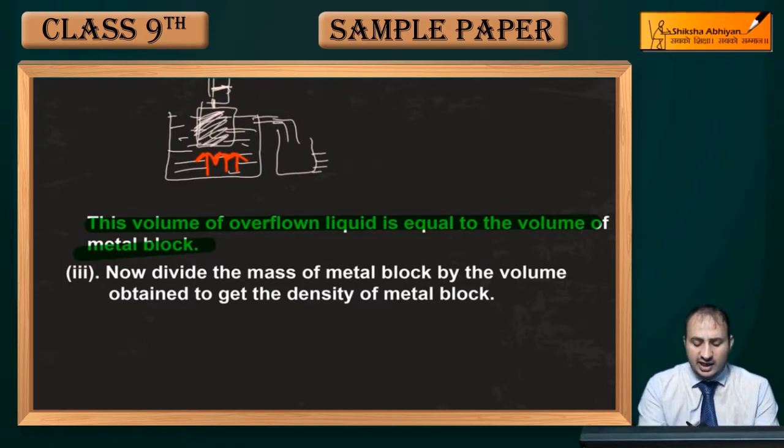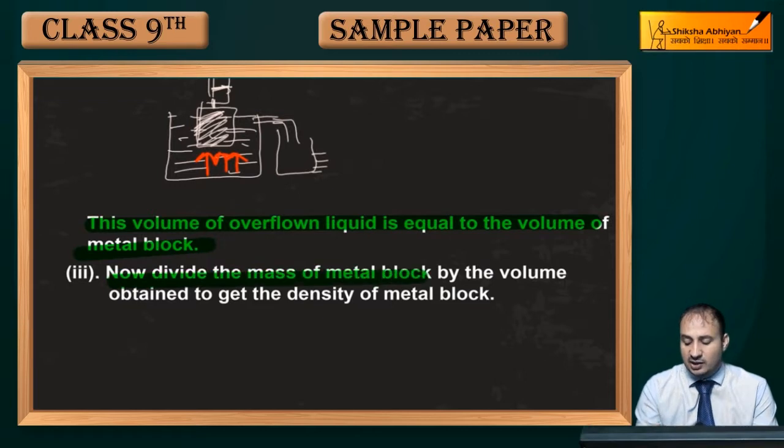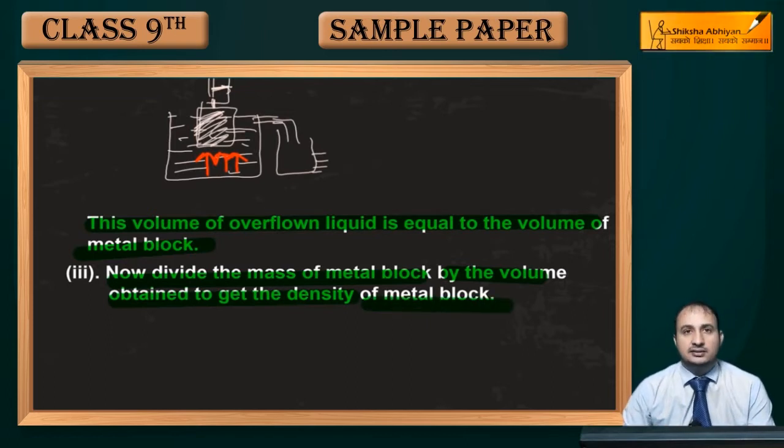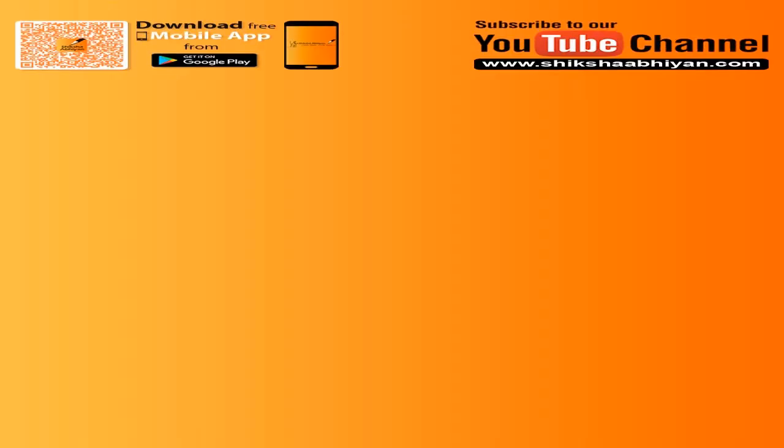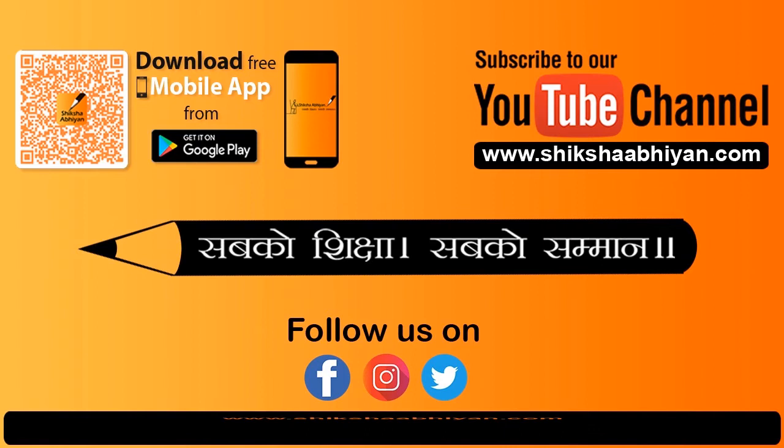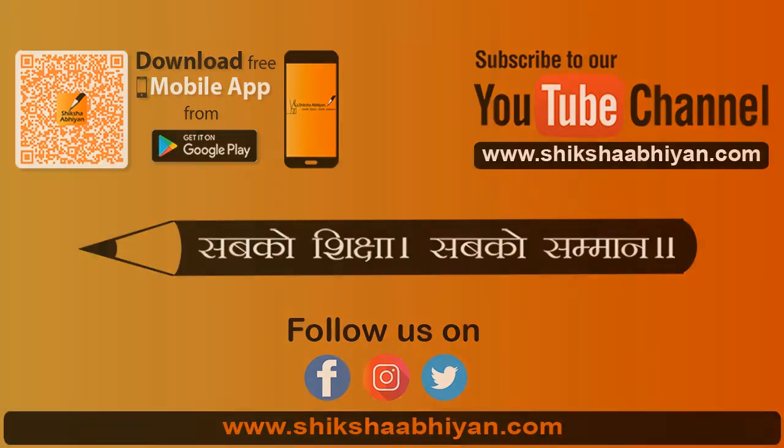Now you divide the mass of the metal block by the volume obtained to get the density. You divide the mass of the metal block by the volume obtained to get the density.